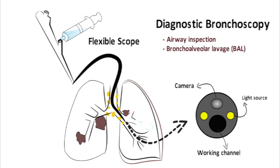Another common sampling technique is endobronchial brushing, which can be useful in the diagnosis of malignancy, especially tumors that are visible from inside the airway or endobronchial lesions, or also for infections. Small brushes are passed through the working channel of the bronchoscope to obtain cellular material from endobronchial lesions or from the distal sub-segments of the lungs.